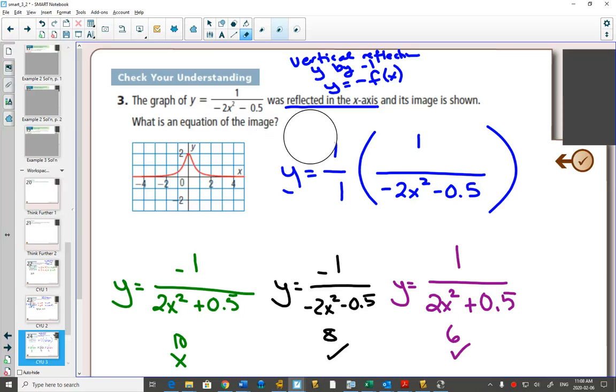In the purple one, I took the negative off the top and put it on the bottom. Would you agree that one over negative one is still a negative? And then I distributed that negative onto the bottom.